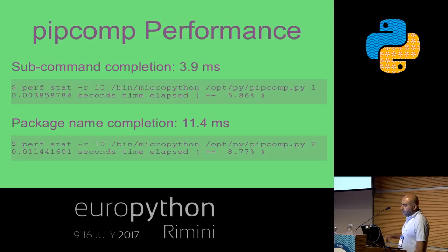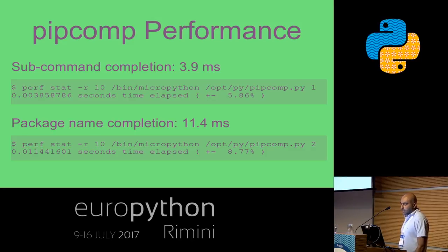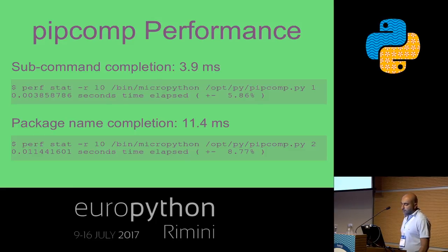Let's compare the performance. We know that just importing pip for auto-completion can take up to 1000 milliseconds. When our implementation is simply spitting out the subcommands, it does it in 3.9 milliseconds — way under 100. When it connects to fetch the package names, opens the HTTP connection, gets the HTML and prints it out, it does all that in 11 milliseconds. That's fantastic performance, way more than what we need.